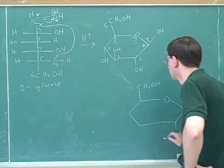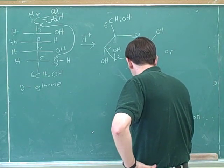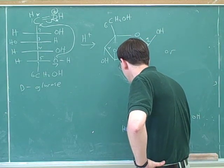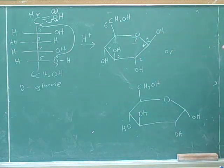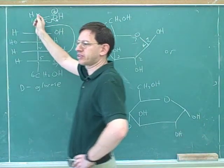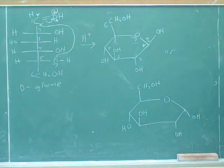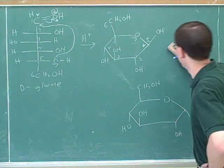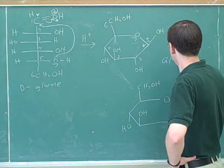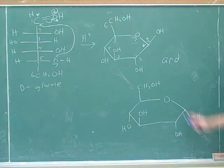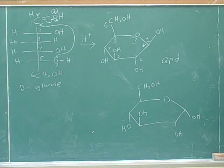So this could be pointing either out. Do you get both or you only get one or the other? You tell me. When we're attacking this trigonal planar, how many products should we get? Two. Two. So that should be and.